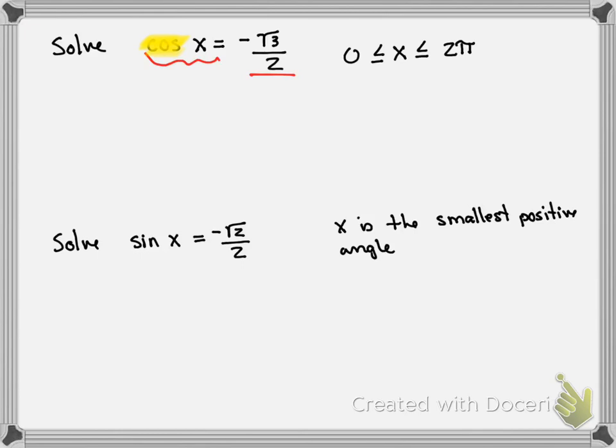That means I'm looking for an x value. Why an x value? Because it's talked about cosine. Cosine refers to x. So I'm going to draw myself a circle.